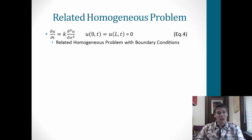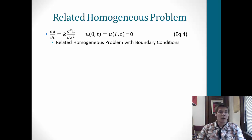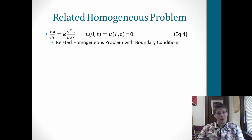How we find the related homogeneous problem is we take off that q function and substitute u's for our v. So we get: partial u with respect to t equals the constant k times the second partial of u with respect to x. With homogeneous boundary conditions: u(0,t) equals u(L,t) equals 0. It looks quite similar to the first equation, just without that function q at the end — that's the biggest change.